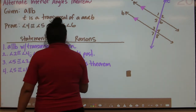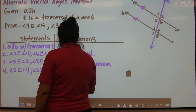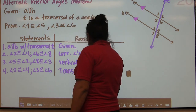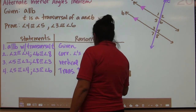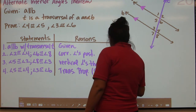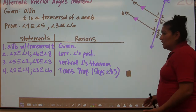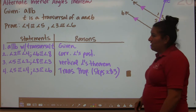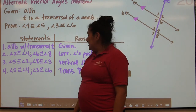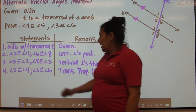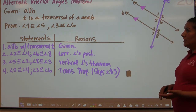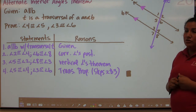In Step 4, we put the transitive property, coming from Steps 2 and 3. That concludes our proof, because we wanted to prove that angle 4 was congruent to angle 5 — and we got that — and that angle 3 was congruent to angle 6 — and we got that.